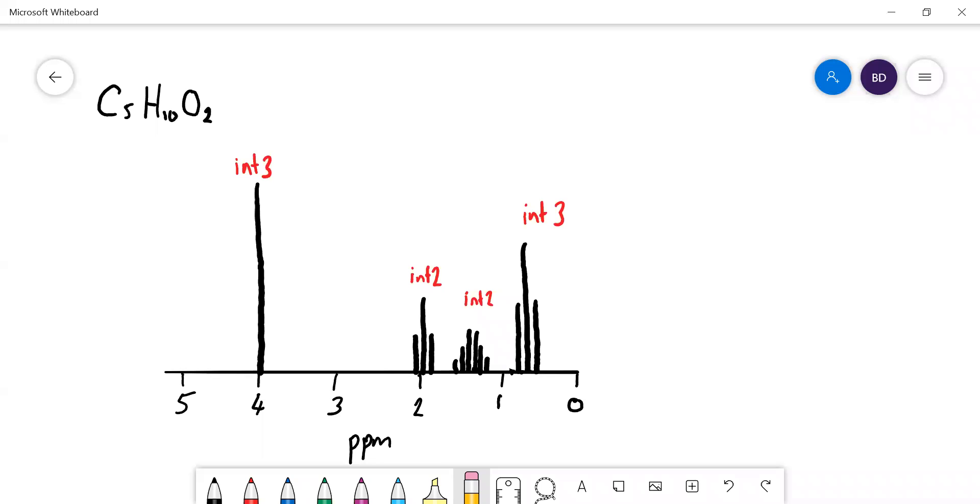Okay, so we have to work out the structure of this compound, C5H8O2, and here is its 1H NMR spectra down there.